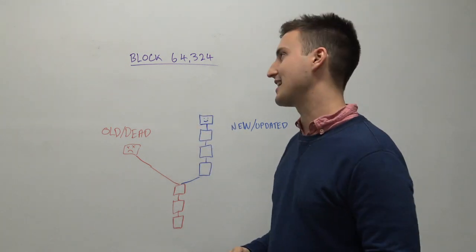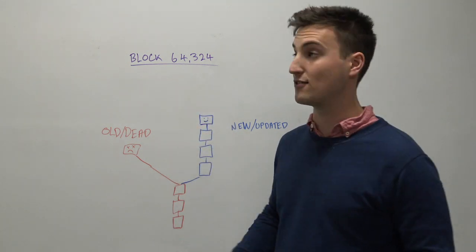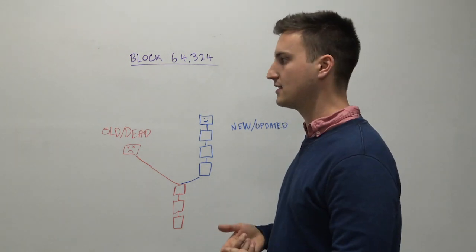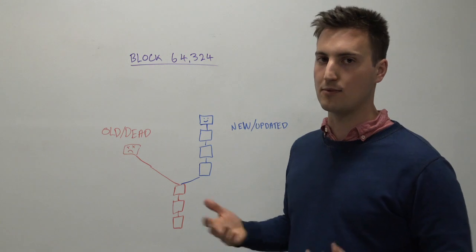Loki's about to go through a hard fork. It's going to happen at block 64,324. It's non-contentious, so we have the miners, exchanges, and the communities all on board.